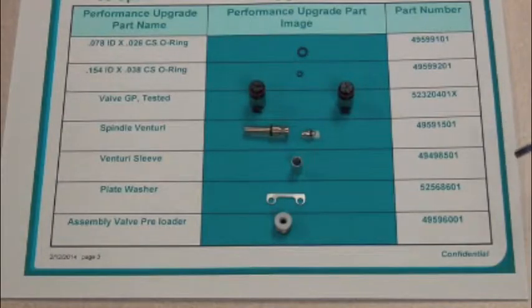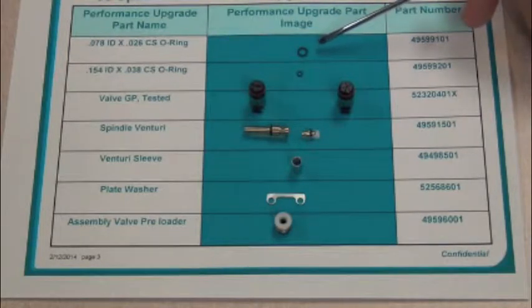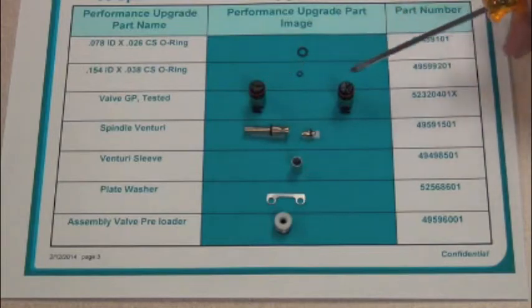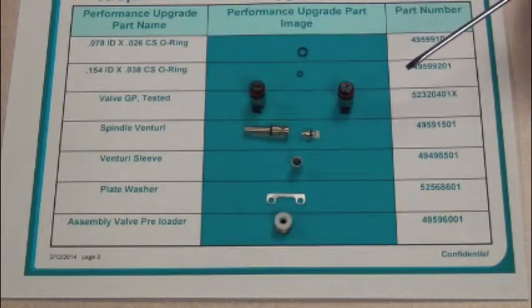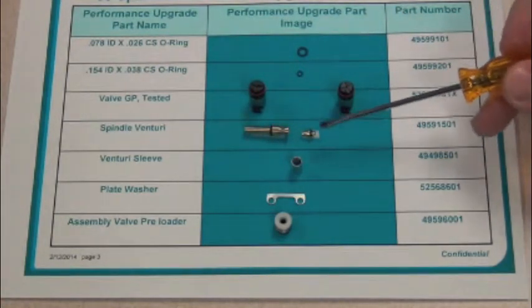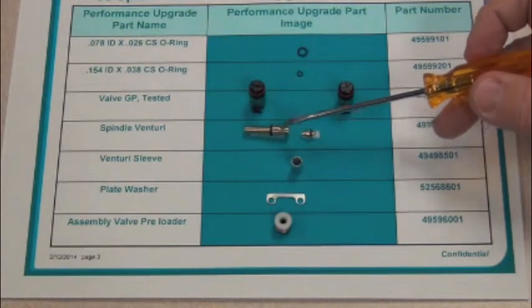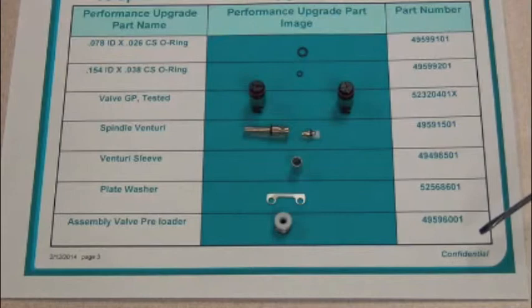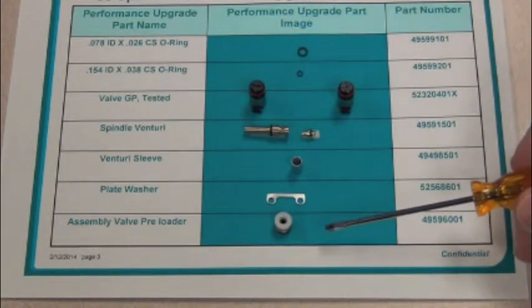The parts required for the spindle performance upgrade are one large o-ring, one small o-ring, two poppet valves, one venturi with o-rings (a large o-ring and a small o-ring), one venturi sleeve, one plate washer, and one valve preloader.